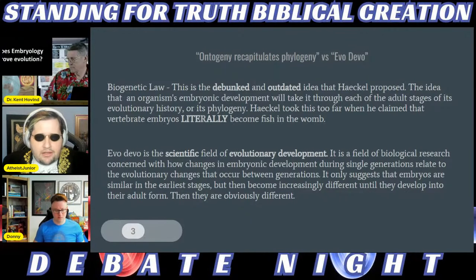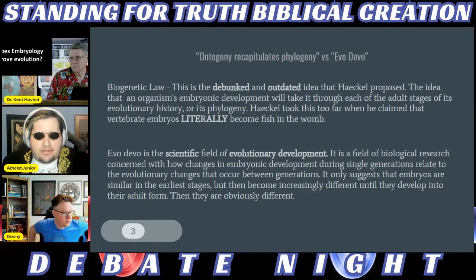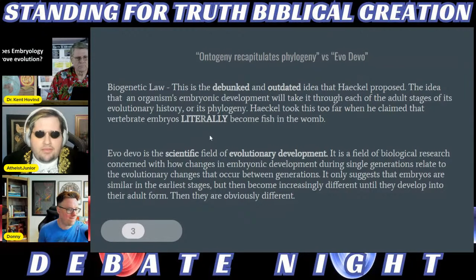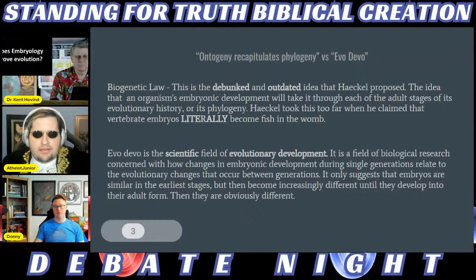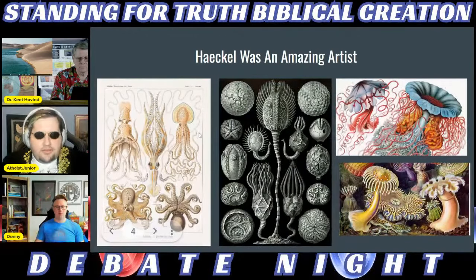Evo-devo is a scientific field of evolutionary development concerned with how changes in embryonic development during single gestations relate to evolutionary changes between generations — basically the relationship between embryo development and species evolution. It only suggests embryos are similar in their earliest stages, then become increasingly different until they develop into their adult form — an adult turtle and adult pig are obviously different, but in their earliest embryonic stages they look quite similar.